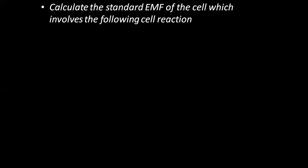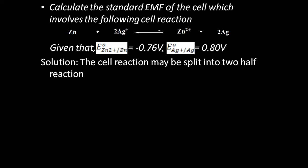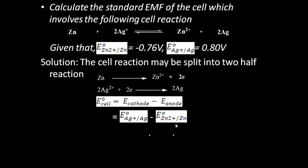For the next problem: calculate the standard EMF of the cell involving the following reaction. E°(Zn²⁺/Zn) = −0.76 V and E°(Ag⁺/Ag) = +0.80 V. Split the reaction: zinc goes to Zn²⁺ losing two electrons — oxidation; Ag⁺ takes those two electrons to give silver — reduction. So silver is cathode, zinc is anode. Alternatively, zinc has the lower SRP so it is anode; silver has the higher value so it is cathode. Putting in the values gives 1.56 V as the standard EMF.